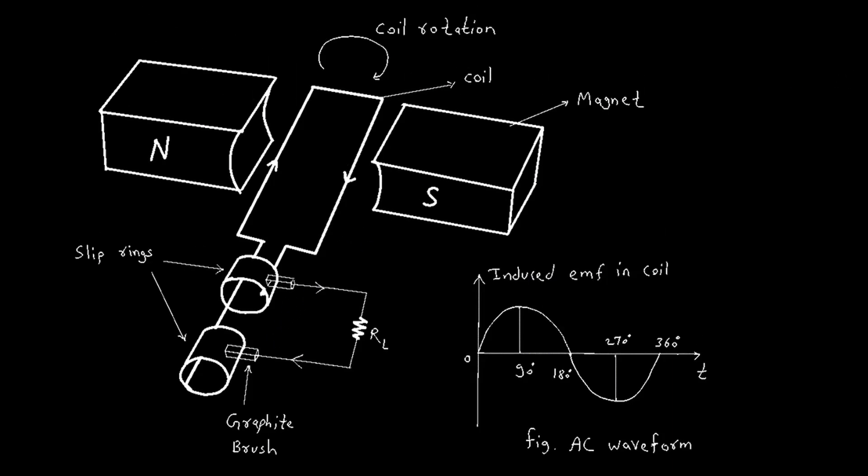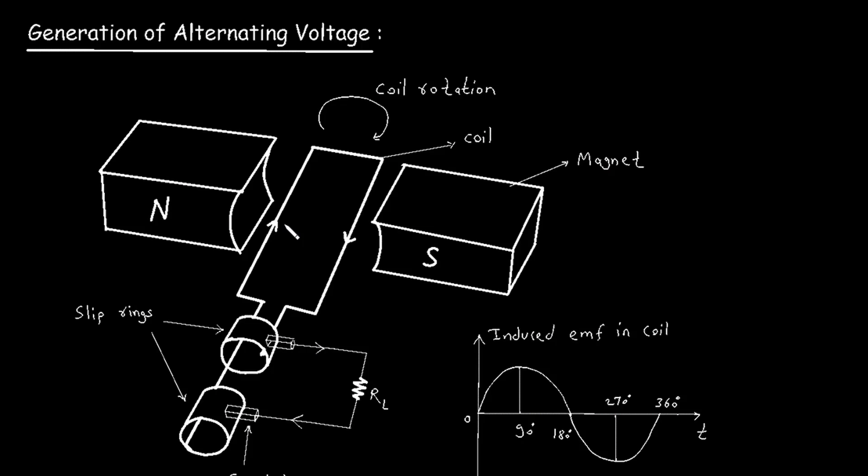Now let's see what will happen when this coil rotates. There will be magnetic lines of force or magnetic flux between these two magnets. Due to the rotation of this coil, it will cut the magnetic flux.